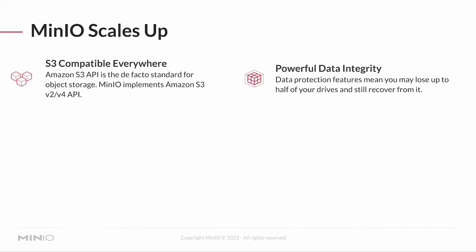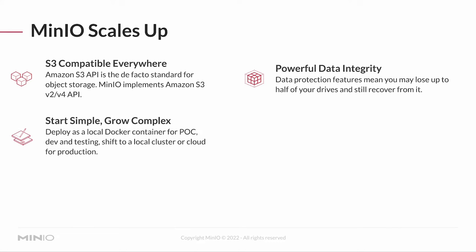Using MinIO at the proof of concept stage means that as your data grows, you can become more complex. I can use a local Docker container for proof of concept, maybe for some dev or testing. Then I can go to a local cluster, my own on-prem data center, or even the cloud for production. And even better, I can move between clouds very easily using MinIO, because I can deploy MinIO to any cloud provider.